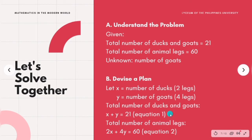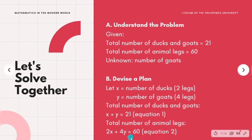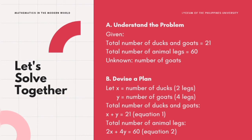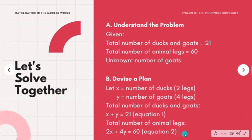Next is to find the equation for the total number of animal legs. Based on our given problem, there are 60 animal legs. In our equation, we will multiply the number of legs in each animal by its corresponding variable representation. Ducks have two legs, giving us 2X. Goats have four legs, giving us 4Y. Joined together: 2X plus 4Y equals 60. This is our second equation.